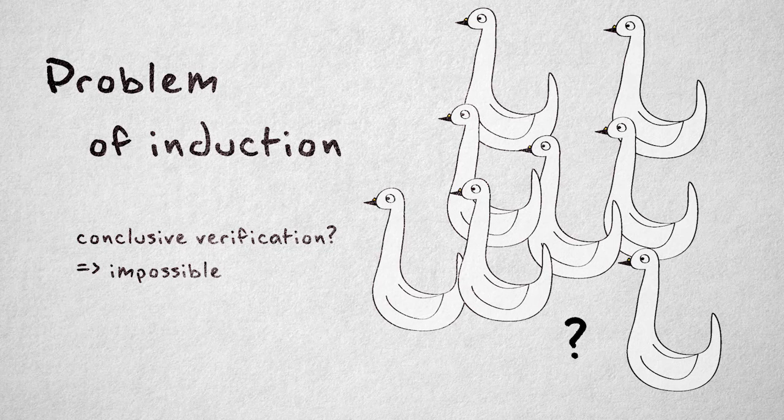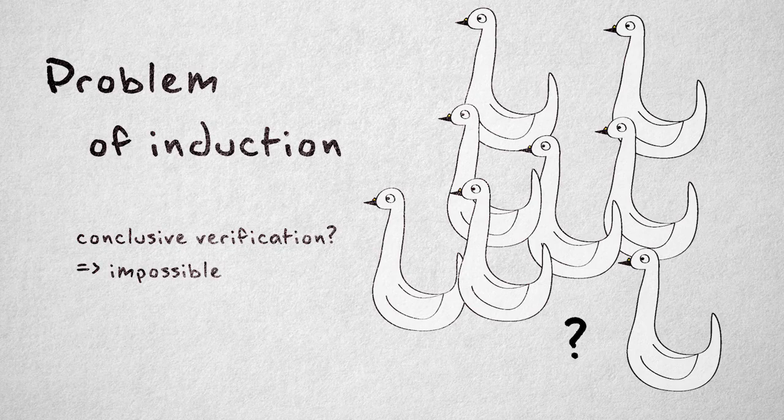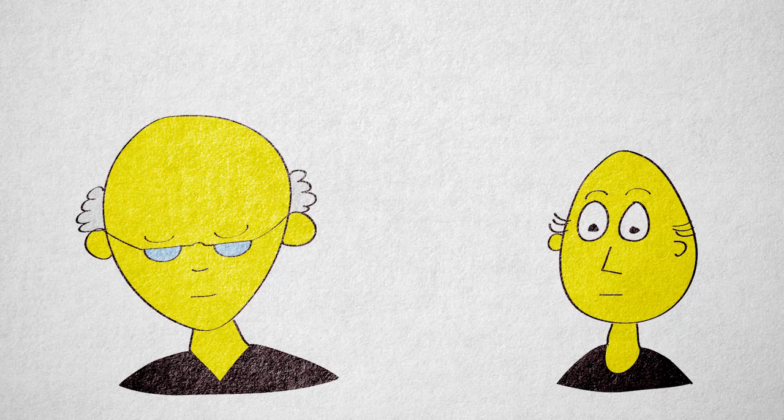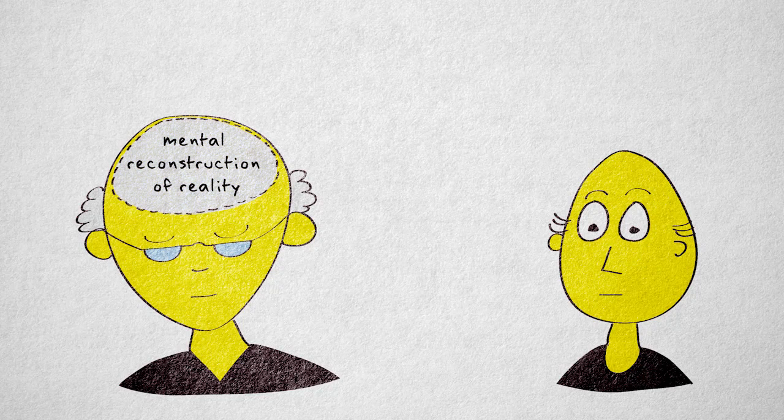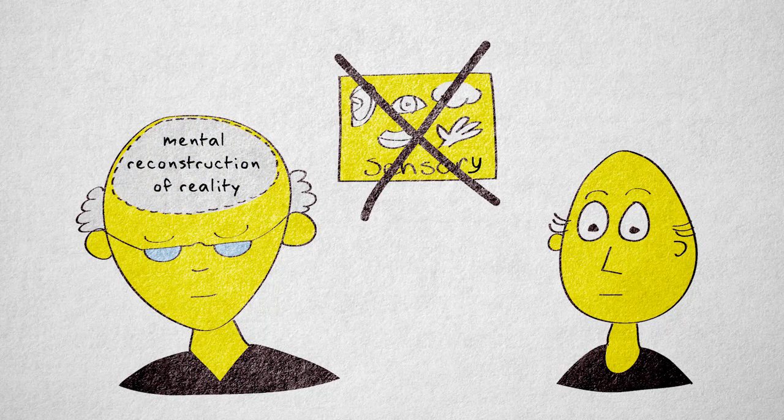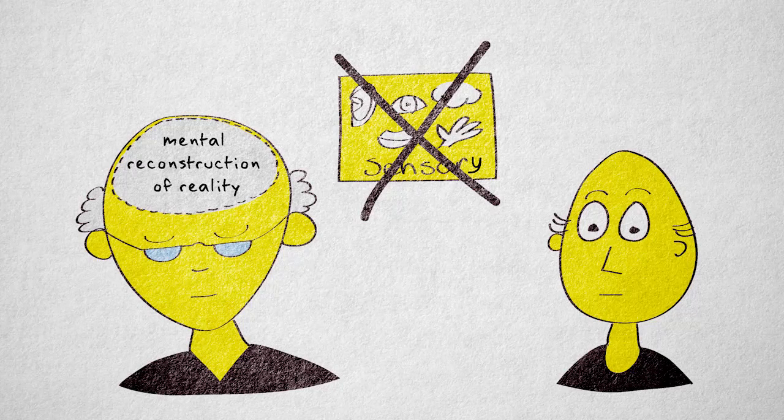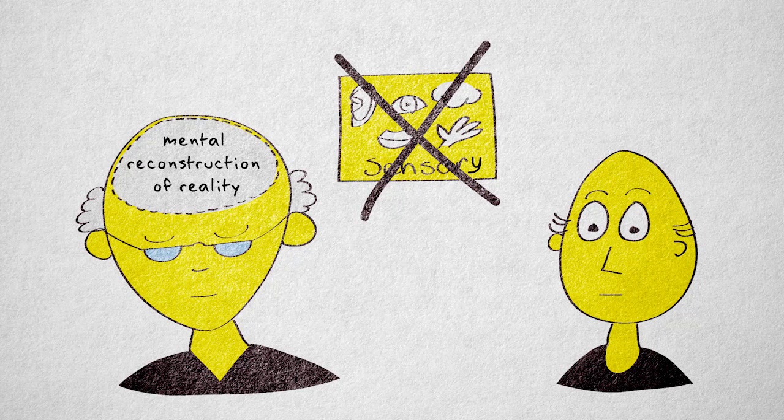Partly in reaction to Hume's skepticism, at the start of the 19th century, a philosophical movement known as German idealism gained popularity. The idealists believed that we mentally construct reality. Our experience of the world is a mental reconstruction. Scientific inquiry should therefore focus on what we can know through our own reasoning.